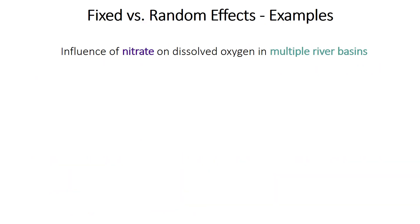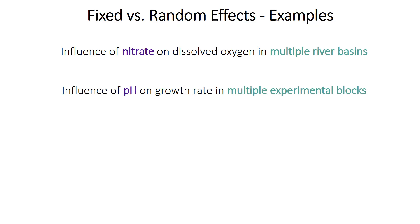Some examples might help. In the first example, we're treating nitrate as a fixed effect because it's a continuous variable and it's the variable of interest. We can possibly treat multiple river basins as a random effect if we want to account for the possibility that different rivers may have a different relationship between nitrate and oxygen, but we could also treat river basin as a fixed effect depending on the number of basins and our goal. In another example, we might treat experimental blocks as a random effect if we aren't interested in their effect but want to account for this potential variability.